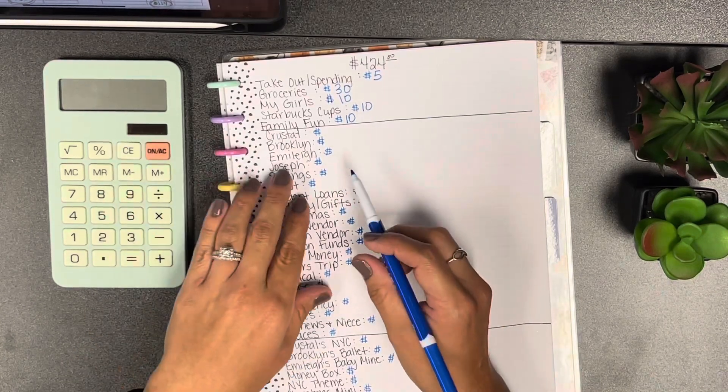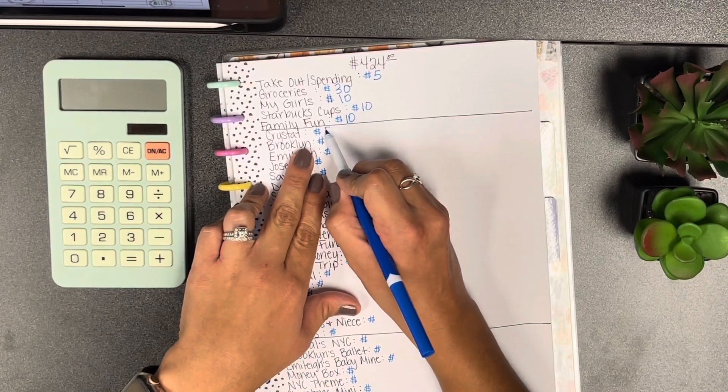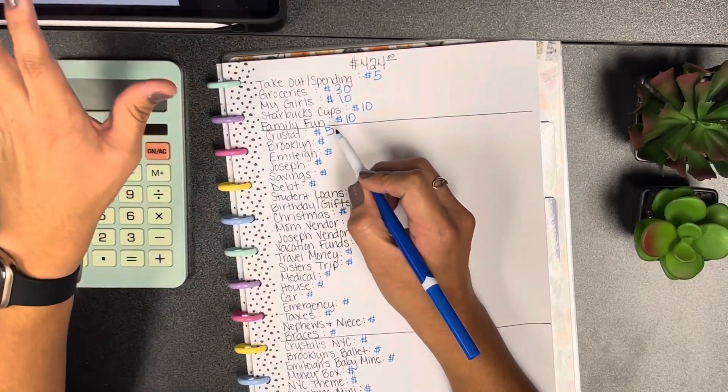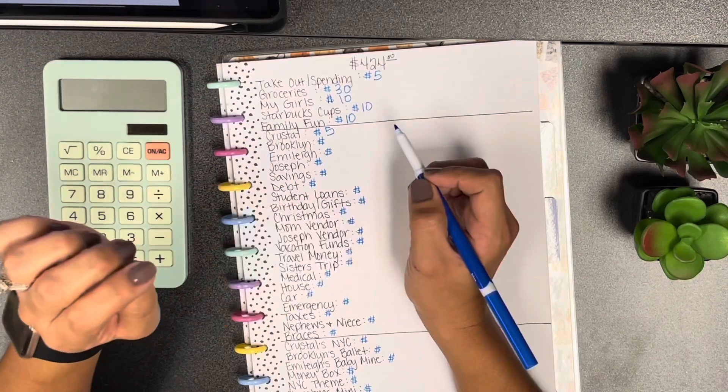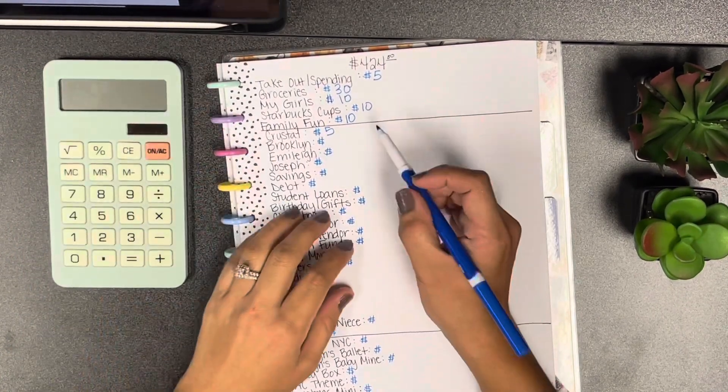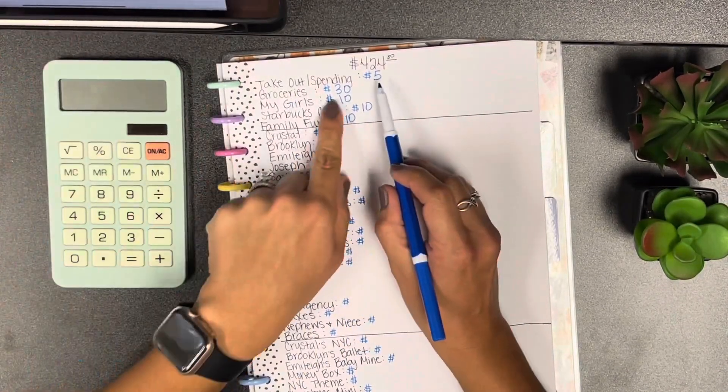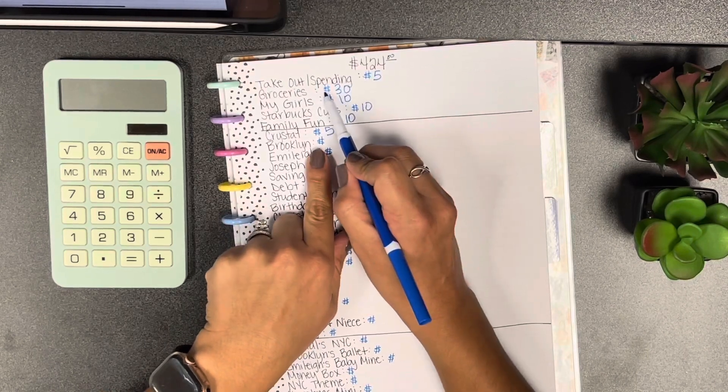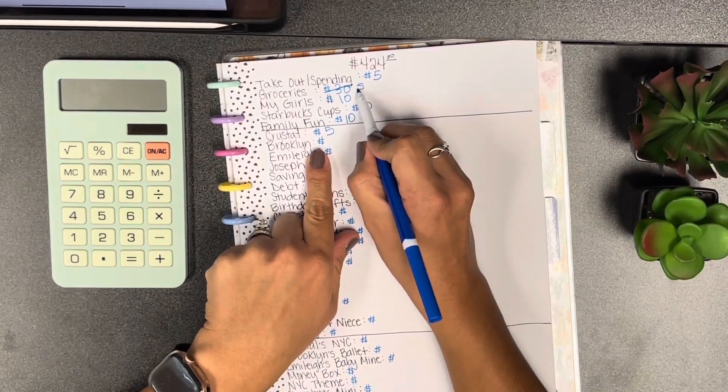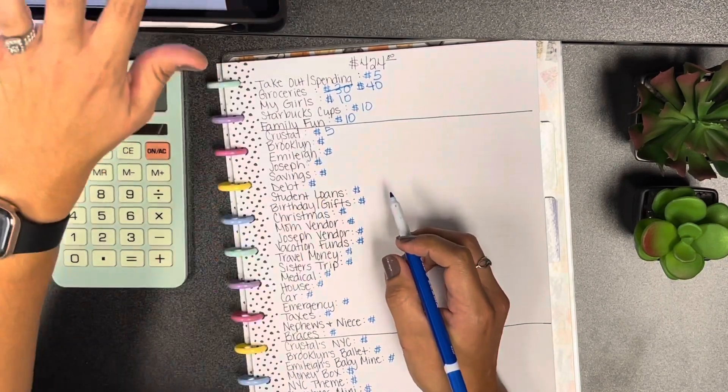For Crystal I'm gonna add... oh man, so I did this wrong. I put it on the wrong screen on my iPad so I gotta change up just one thing here. For groceries we're actually gonna do $40.